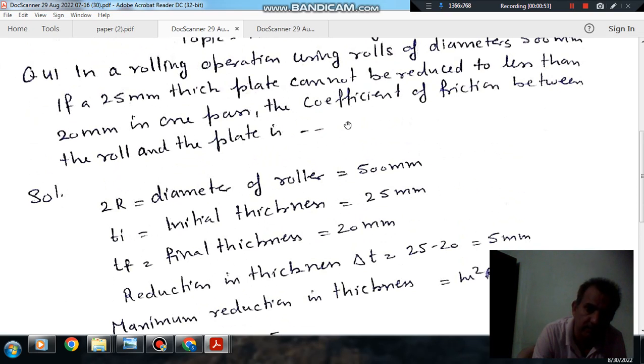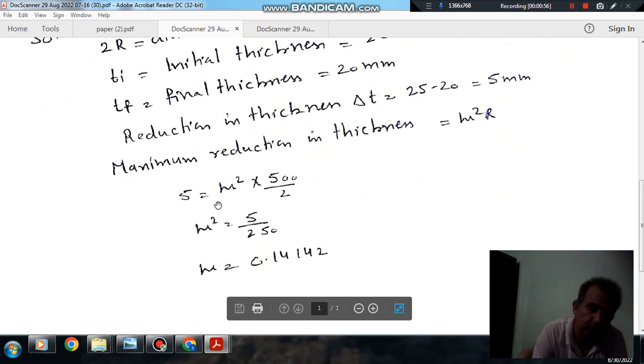That is the maximum reduction. So, 5 equals μ² times 500 by 2. Therefore, μ equals 0.14142.